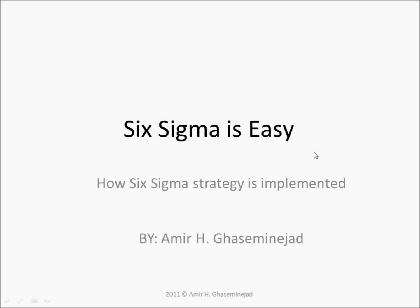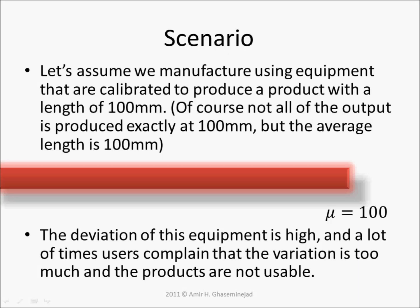In this presentation, I will explain how Six Sigma strategy is implemented. Let's assume we manufacture using equipment that is calibrated to produce a product with a length of 100 millimeters. Of course, not all of the output is produced exactly at 100 millimeters, but the average length is 100 millimeters.